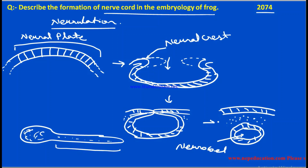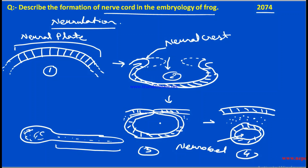This is the concept of how the nerve cord is formed in the frog. Here is diagram one, diagram two, diagram three, and finally diagram four. This fourth diagram is not compulsory, but it shows step by step how the neural plate separates itself from the ectoderm.